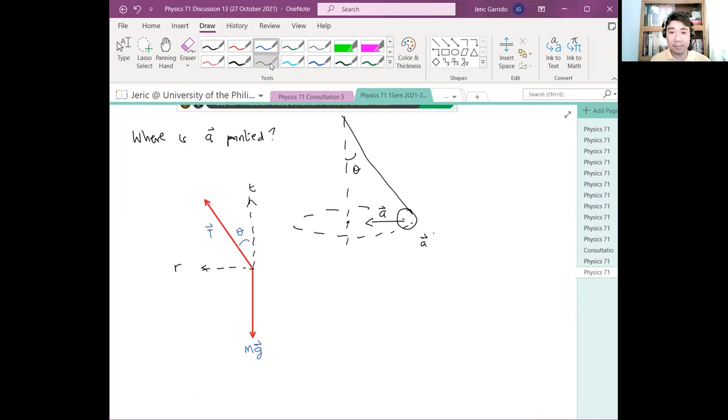Now, after doing so, we can set up the equations of motion. Summation of forces in the radial direction. Ano mangyayari sa ball? Again, it should be, para mamaintain yun yung circular orbit, it should maintain some radial acceleration. Which is what? Ano yan? Ano yan dapat? This should be equal to what? This is mv squared over r. Tama? Gets? I hope you get it. So you have mv squared over r.